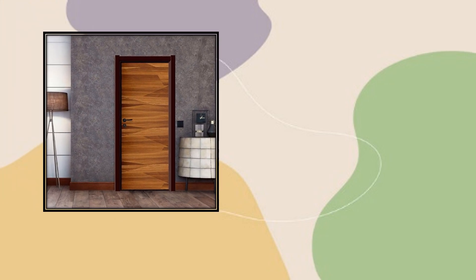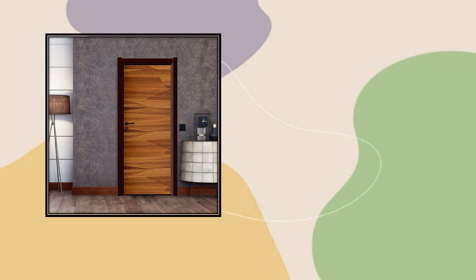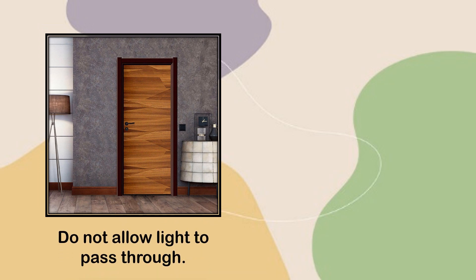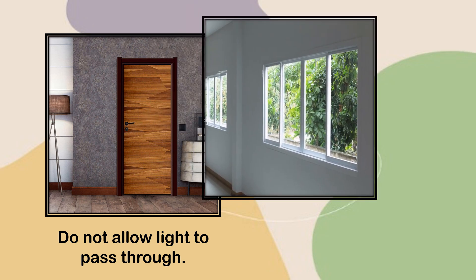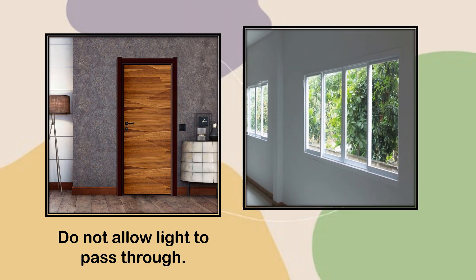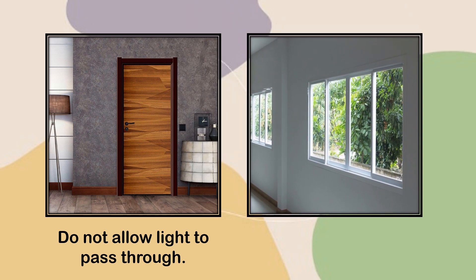The light that partially gets through stained glasses highlights the different colors and hues, making them a sight to behold. While light partially gets through a stained glass, some materials, like a wooden door, do not allow light to pass through them. There are also materials, like clear glass windows, that let light shine through them.